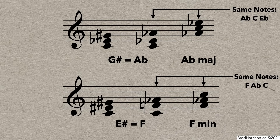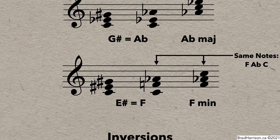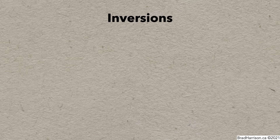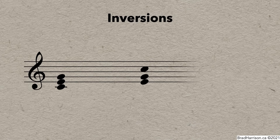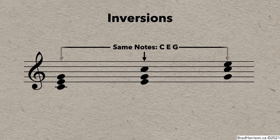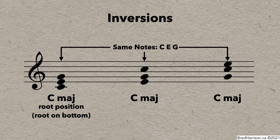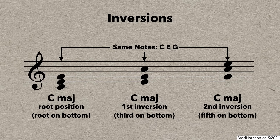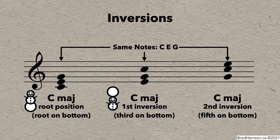Which brings us to what happens when the triad isn't in a snowman shape. These are called inversions. Inversions occur when the bottom note of the chord is something other than the root note. These three chords all have C, E, and G, just in different shapes or inversions. The snowman shape is called root position. If the third is on the bottom, that's known as first inversion. And if the fifth is on the bottom, that's known as second inversion. When identifying chords, you'll want to figure out what the root of the chord is by rearranging into a traditional snowman shape, and then analyze the other notes to identify the chord.